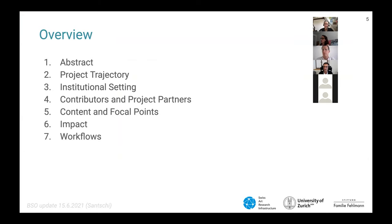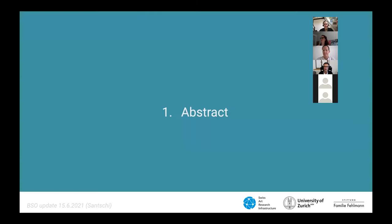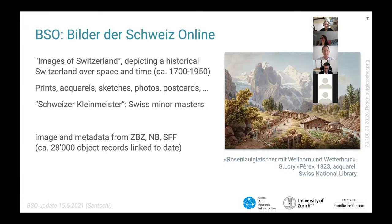Now it's time to look back as well as forward. For a brief summary: Bilder der Schweiz Online — Images of Switzerland — is interested in the depictions of historical Switzerland. We are looking at spatial as well as temporal vectors to understand how the country and its way of depicting it has changed between circa 1700s and 1950. During that time span, we're looking at objects like prints, aquarils, photos, sketches, postcards, and other media.